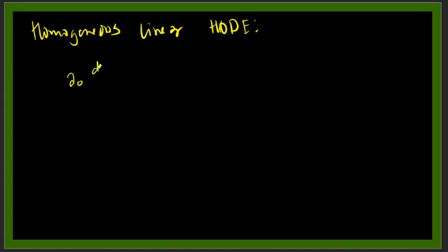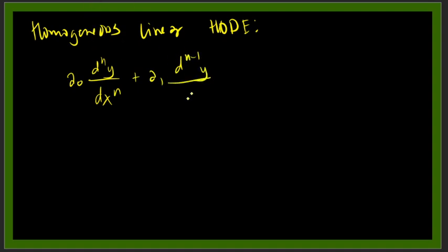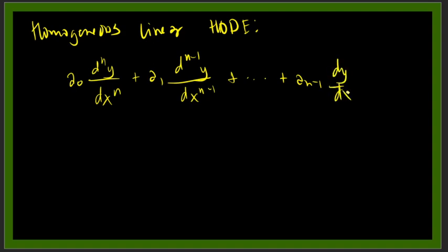The general formula is: a-sub-zero times d^n y, where n is the highest order derivative, plus a-sub-one times the (n−1)-th order derivative — note these are orders of the derivative, not exponents — plus so on and so forth, plus a-(n−1) times dy/dx, plus a-sub-n times y, equals zero.